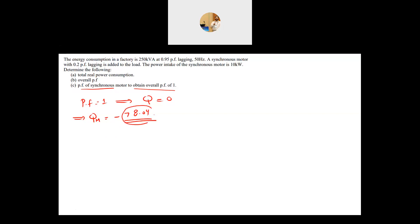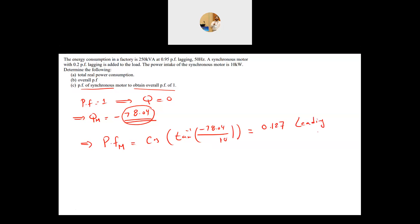Now we need to find what power factor the motor must operate at. When changing the power factor of the synchronous motor, you change Q but not the real power, which stays at 10 kilowatts. Therefore the power factor of the motor equals cosine of tan inverse of negative 78.04 divided by 10 kilowatts, giving 0.127 leading — not lagging, because Q must be negative.